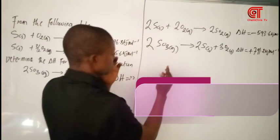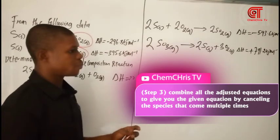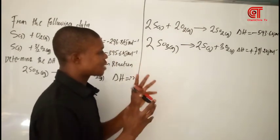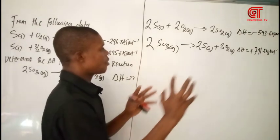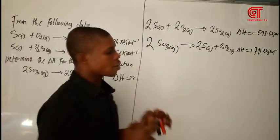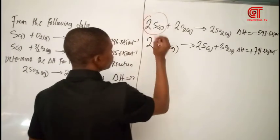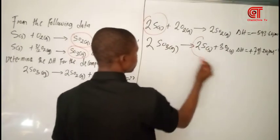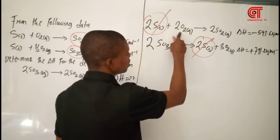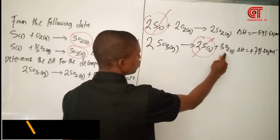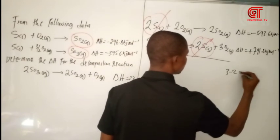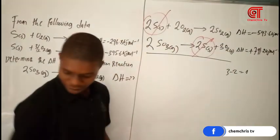The last step is: combine the two equations and cancel out species that appear multiple times. When the species appear multiple times and they are on opposite sides — one on the reactant side and one on the product side — you cancel them. If you look at sulfur here, it's on the product side; sulfur here is also on the product side, so those cancel. For oxygen, here we have three and here we have two, so three minus two leaves one oxygen remaining on the product side.